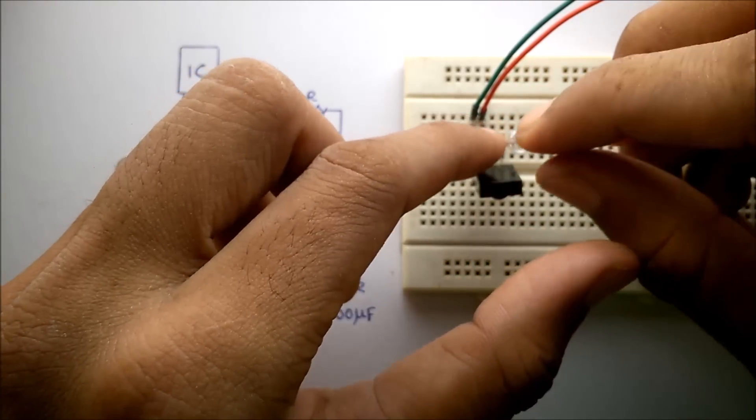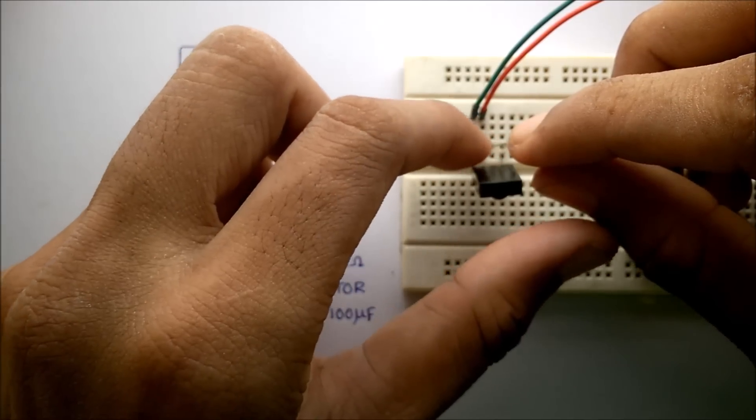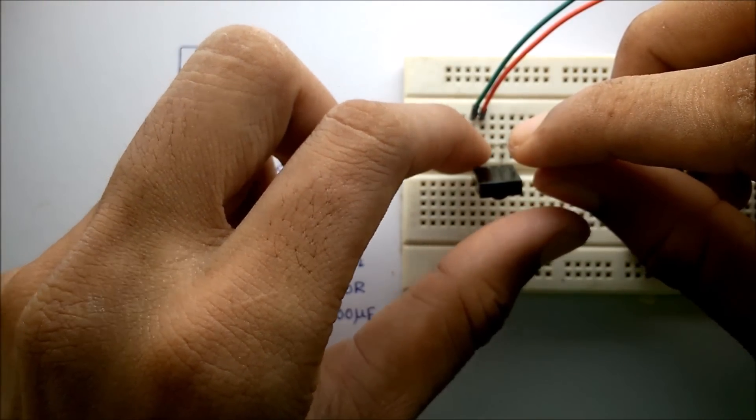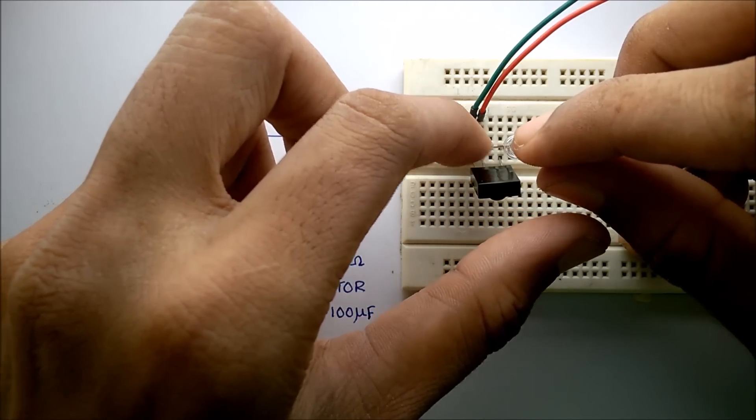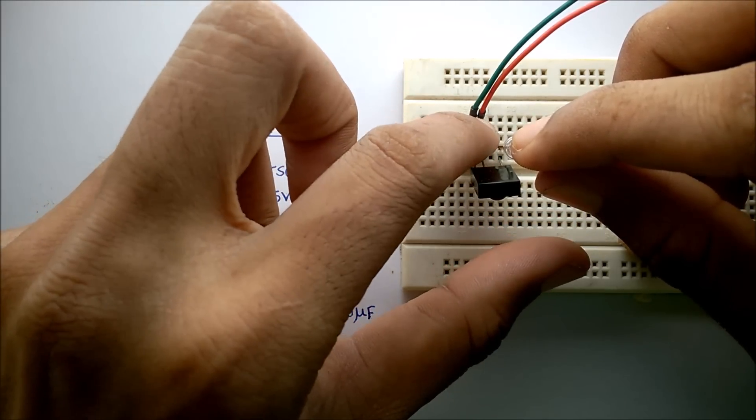So the positive of the LED is in the empty space between the second and third pins. Now I will be connecting a resistor to the positive pin.